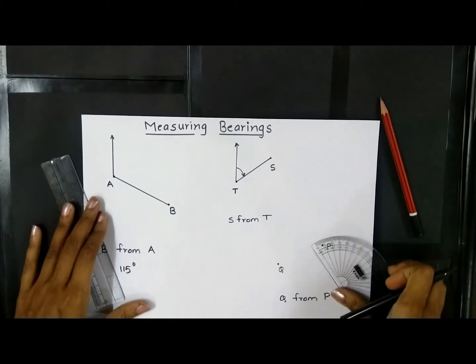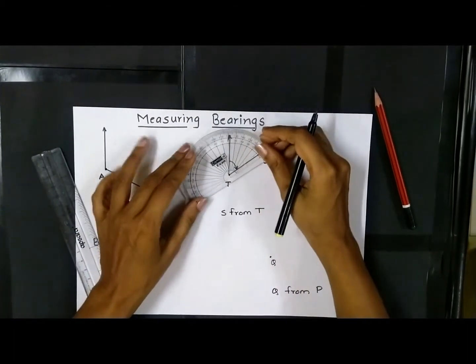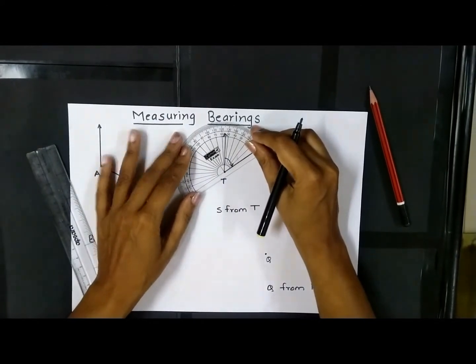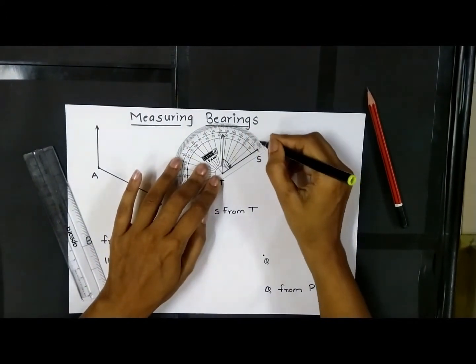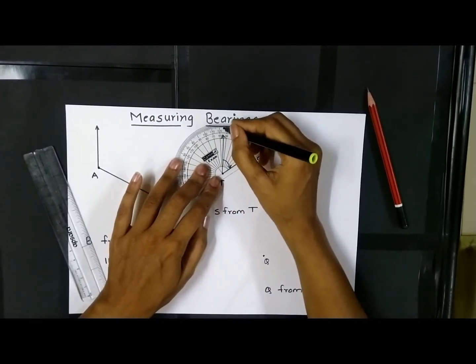To measure this I'll again have to keep my protractor at T in alignment with TS and then measure this angle. So if I measure this angle, this angle is 55 degrees.